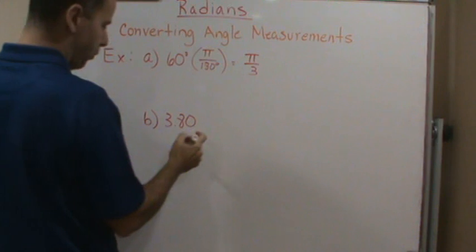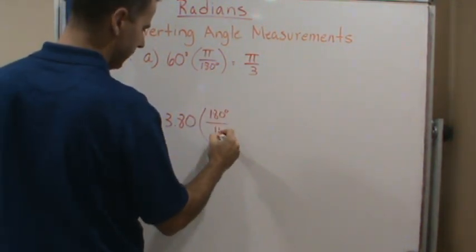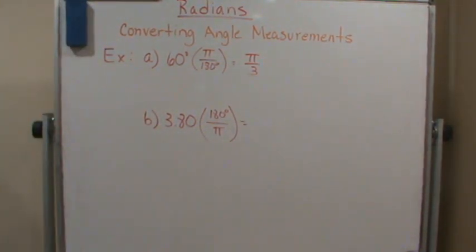So now if I have 3.8, I'm going to multiply this by 180 degrees over pi. And so when I do this, now in this case, I'm going to use the calculator. And this will give me 218 degrees.